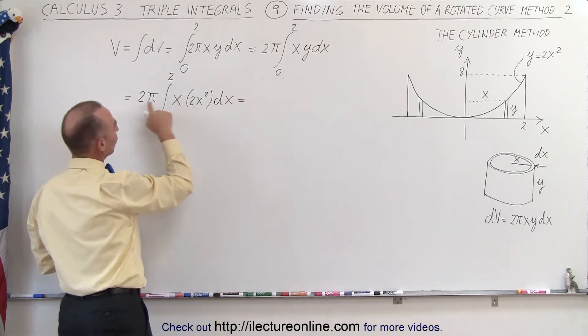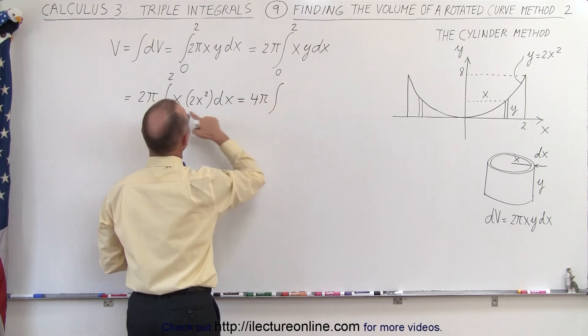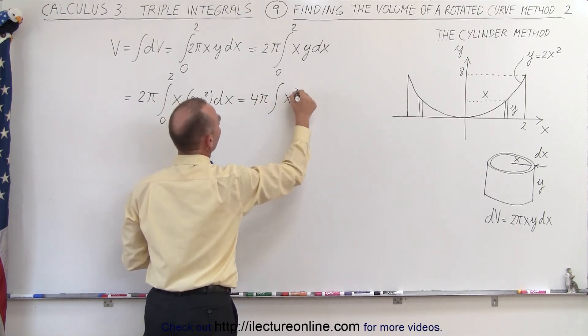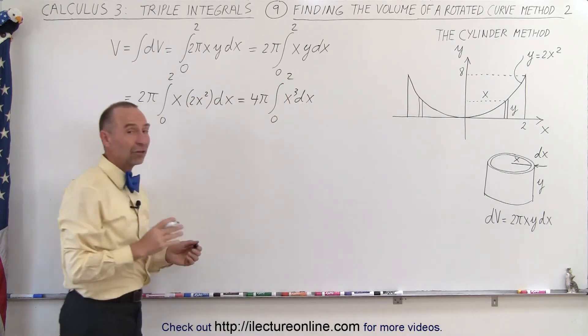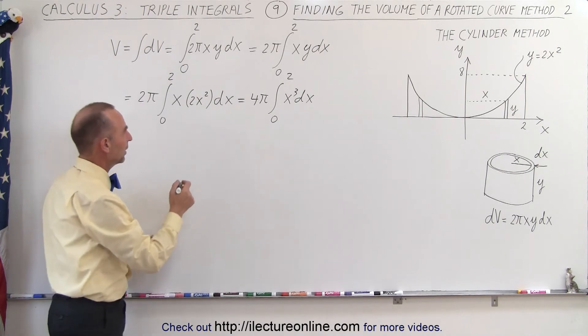Which is equal to, bringing the 2 out, we get 4 pi times the integral of x cubed dx from 0 to 2. And now, that should give us the very same answer as we got in the previous video, so let's go ahead and integrate that.